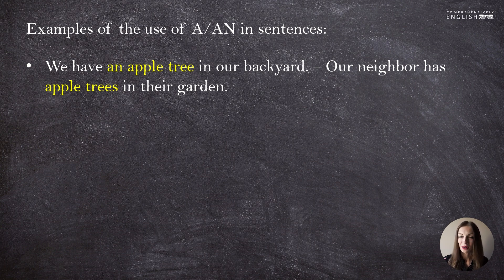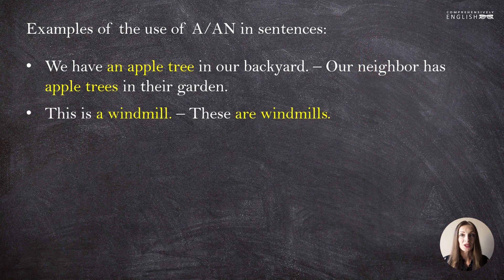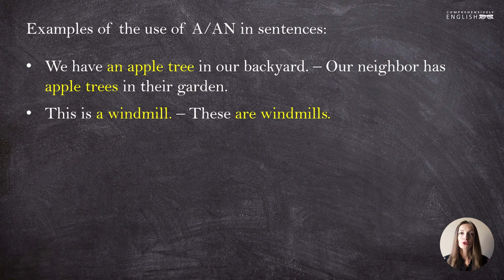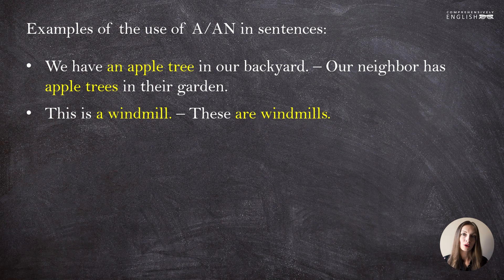I talked briefly about the zero article in the introductory video — if you need a reminder, please re-watch it. Another couple of examples: 'This is a windmill.' 'These are windmills.' We introduce something to the person we're talking to. 'Windmill' is a common, countable, singular noun, so we say 'This is a windmill.' But if we want to speak about something in plural, we don't use 'a' or 'an' — we use the zero article: 'These are windmills.'